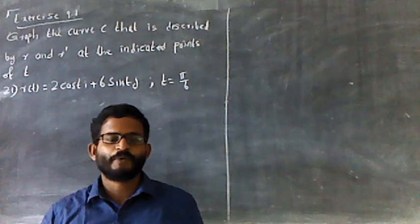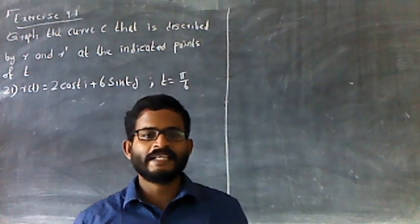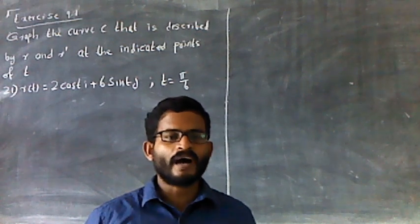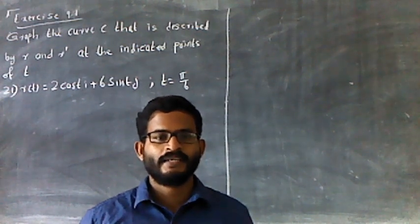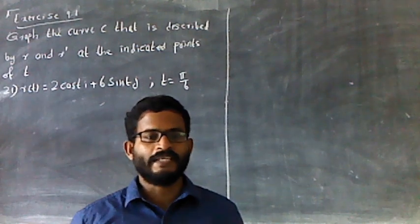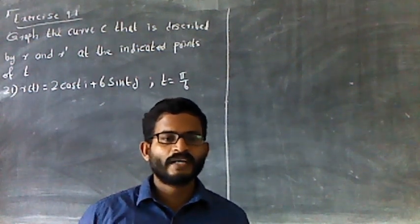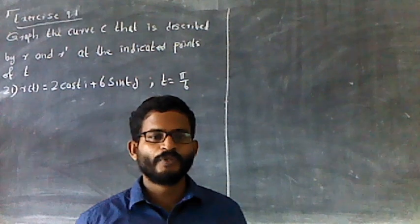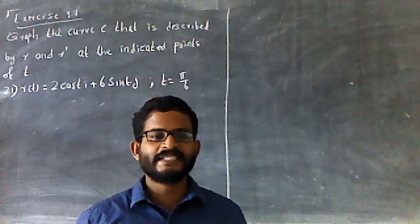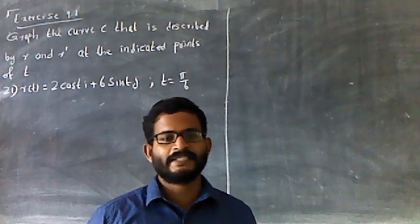Exercise 9.1. The curve C, described by R and R', requires indicating points of T. Request number 21: R is equal to 2 cos(t) i plus 6 sin(t) j at t equal to 5π/6.